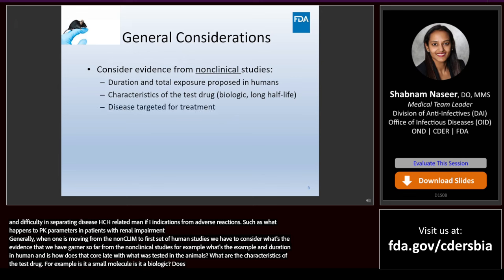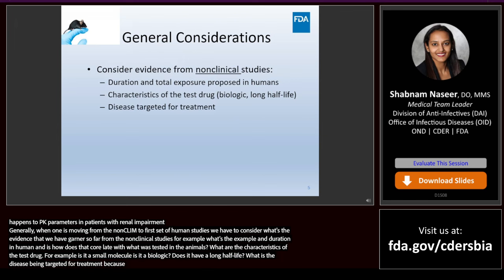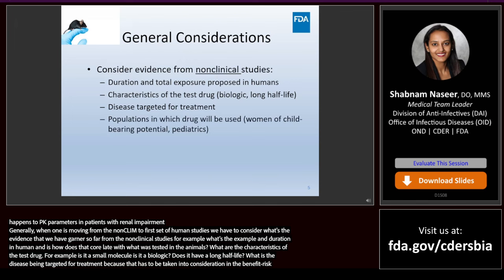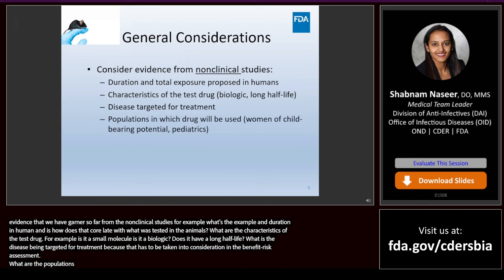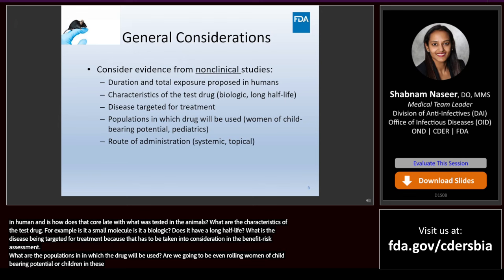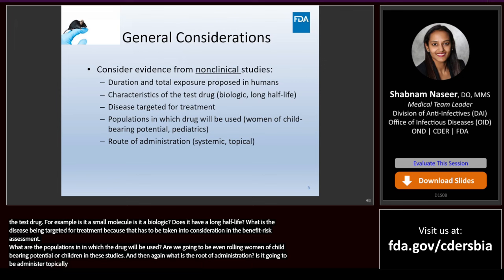What is the disease being targeted for treatment? That has to be taken into consideration in the benefit-risk assessment. What are the populations in which the drug will be used? Are we going to be enrolling women of childbearing potential or children in the studies? And what is the route of administration — is it going to be administered topically or systemically? One has to consider all of these factors.